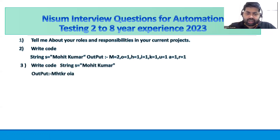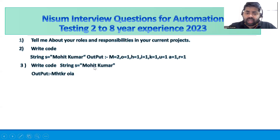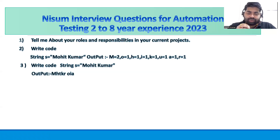The second coding question is a bit more interesting. They give you a string like 'Mohit Kumar' and you have to separate the vowels to the right side and the consonants to the left side. So for 'Mohit Kumar' you'd get 'm h t k r' on the left side and the vowels on the right side. Try this as an assignment and resolve it yourself, or take help from Google.